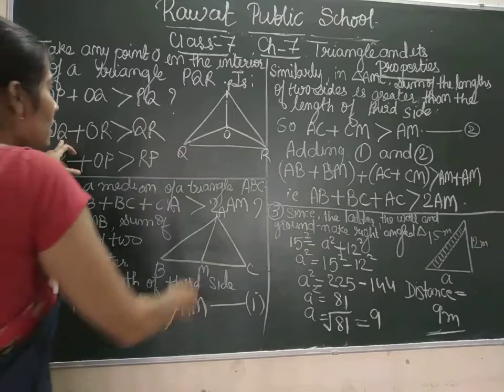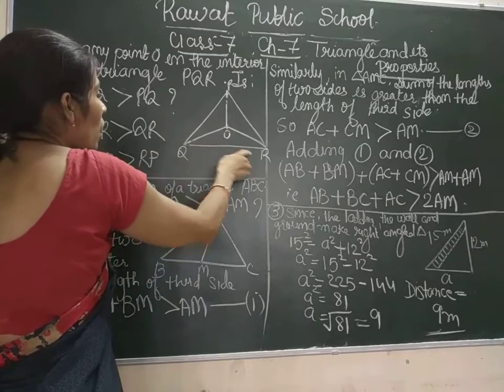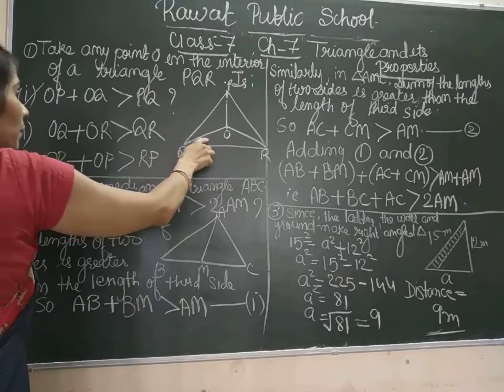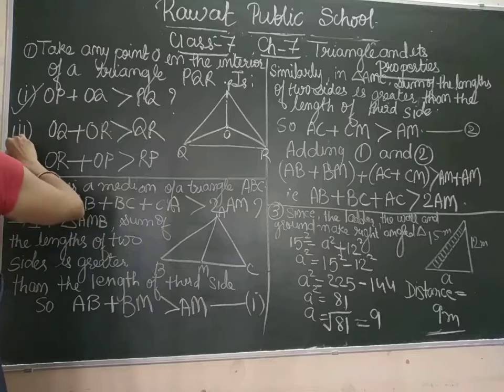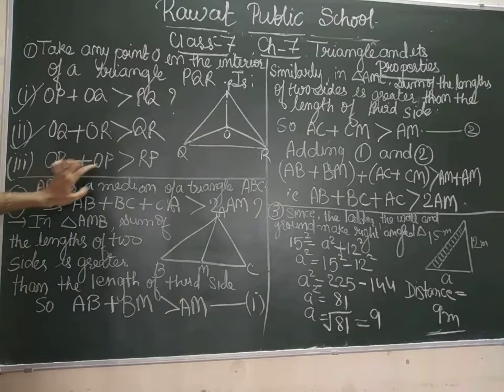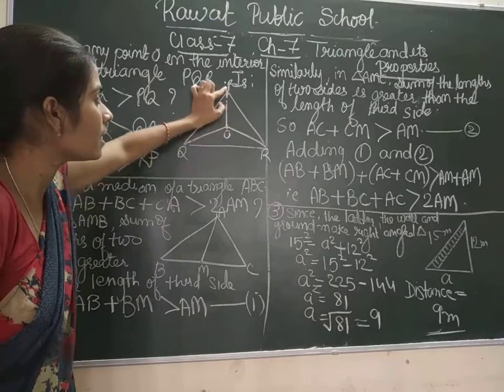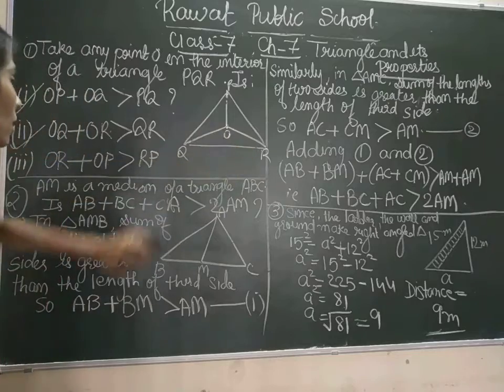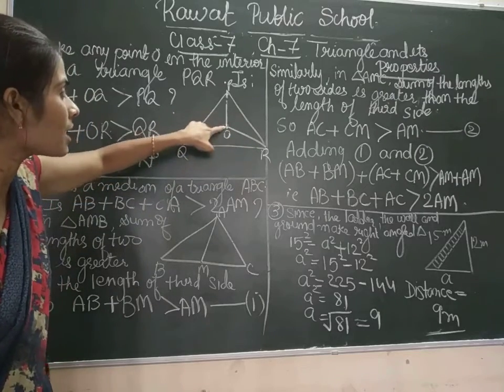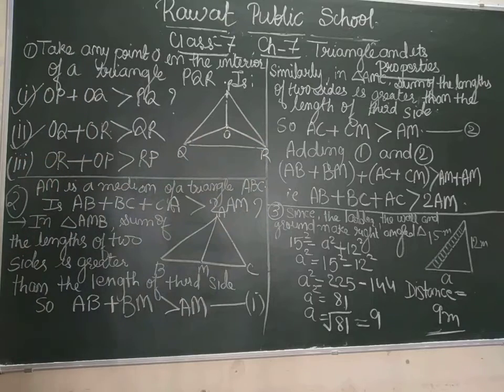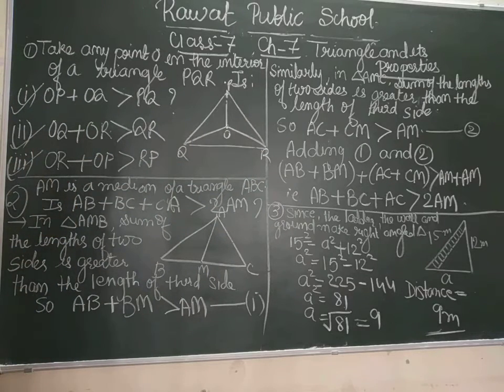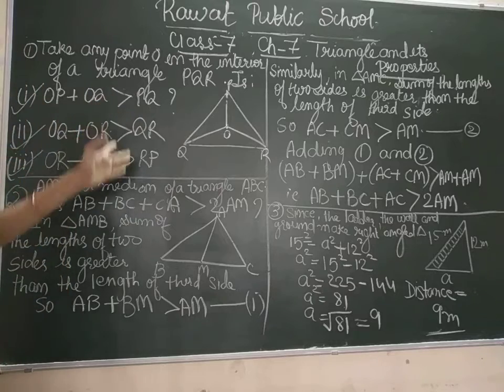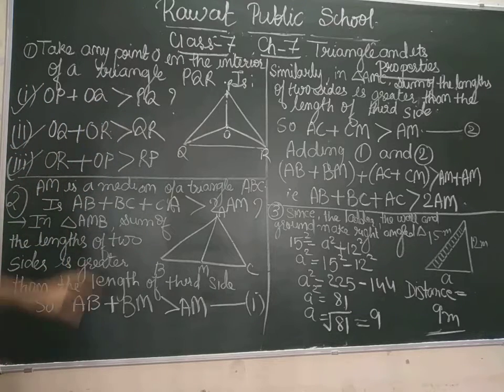Then, if we consider triangle OQR, OQ plus OR will be greater than QR, so this is also true. Then, if we consider triangle POR, OR plus OP is greater than PR, so this is also true. So by triangle side property, all three parts are true.